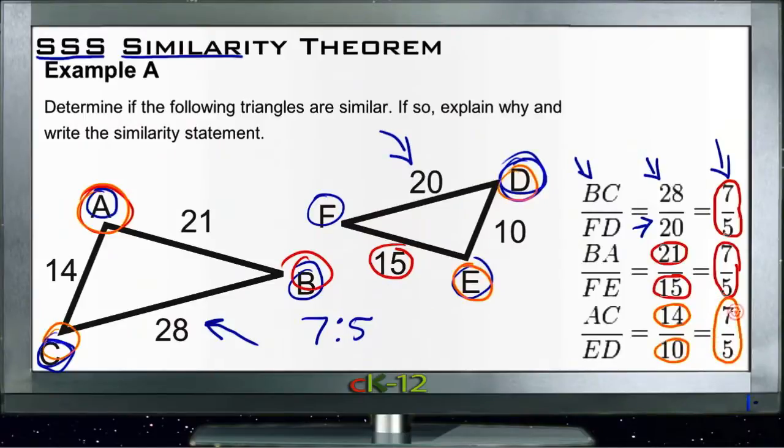The two triangles are indeed similar based on side-side-side, and we can say that triangle ACF, starting with a 90-degree angle and then going across the short side and then on around, is similar to triangle EDF, again starting with the 90-degree angle and going across the short side and then going on around. So the two triangles are in the same order. Let's take a look at Example B.